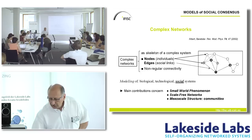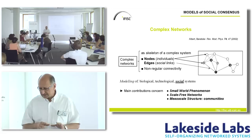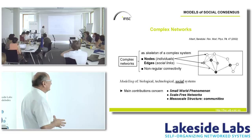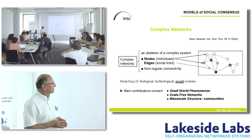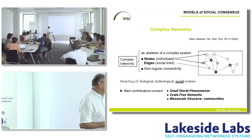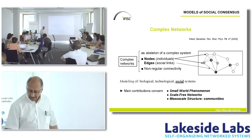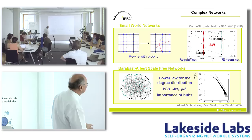The other ingredient is who interacts with whom — the complex network. The basic idea is that the complex network is the skeleton of a complex system. Individuals are the nodes and edges are the connections. This has been used in modeling many types of biological, technological, and social systems. The key ideas concern three issues: the small world phenomenon, scale-free networks, and mesoscale structure — the idea of communities.